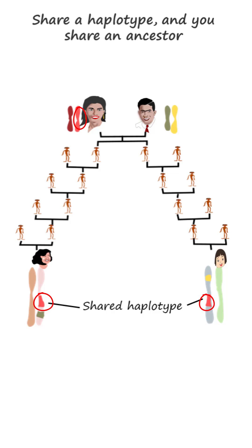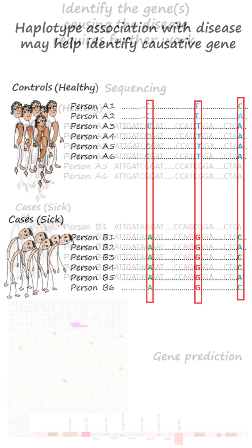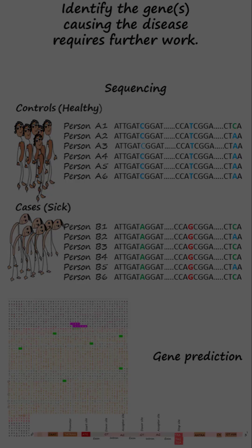Shared haplotypes indicate shared ancestry. If a haplotype is associated with a phenotype, examining the DNA sequence near the polymorphism cluster helps identify the gene or genes that are responsible for causing the phenotype.